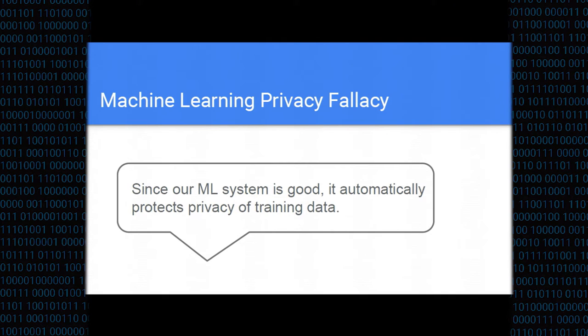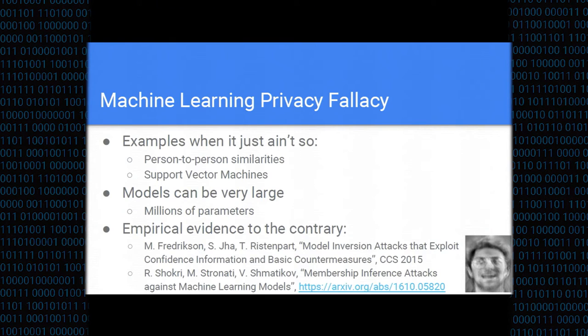And here I want to call out what I term a privacy learning or machine learning privacy fallacy that you can hear from machine learning researchers or data scientists who would say that a well-trained machine learning model would preserve privacy of underlying training data because it's good, it's trained on massive amount of data, and I won't challenge this belief.